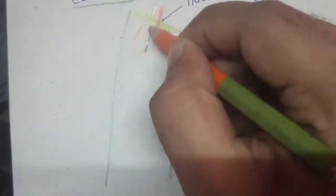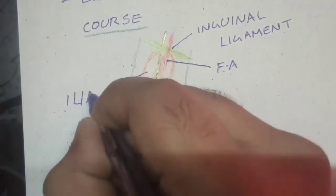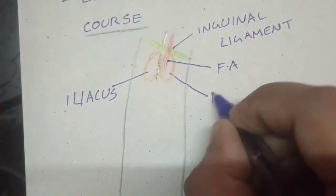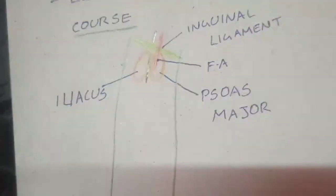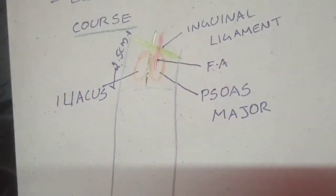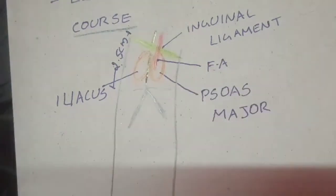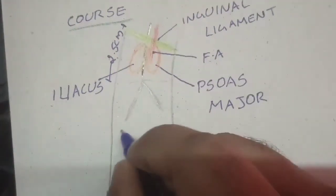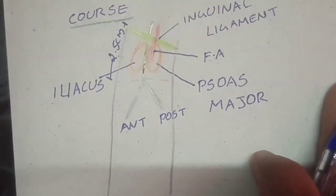In the thigh, it lies in the groove between the iliacus and the psoas major — you can see both muscles in the diagram. After a short course, about 2.5 centimeters below the inguinal ligament, it is divided into an anterior and a posterior division.